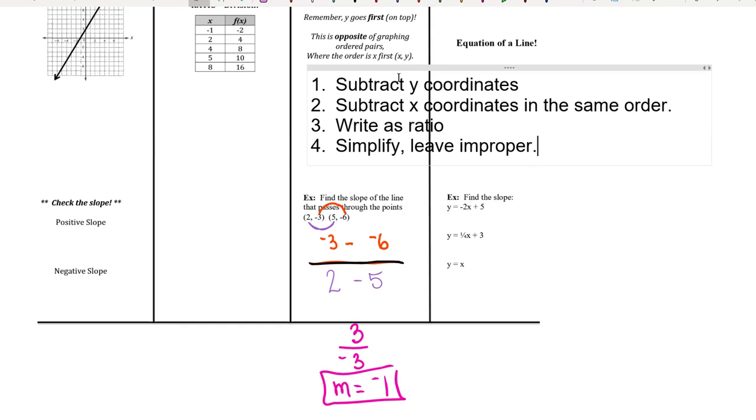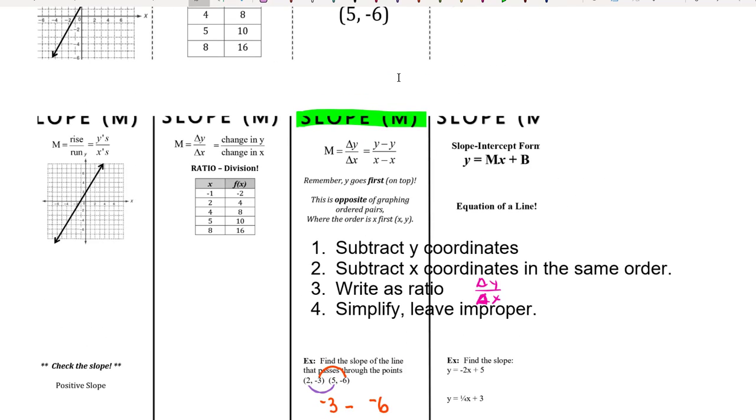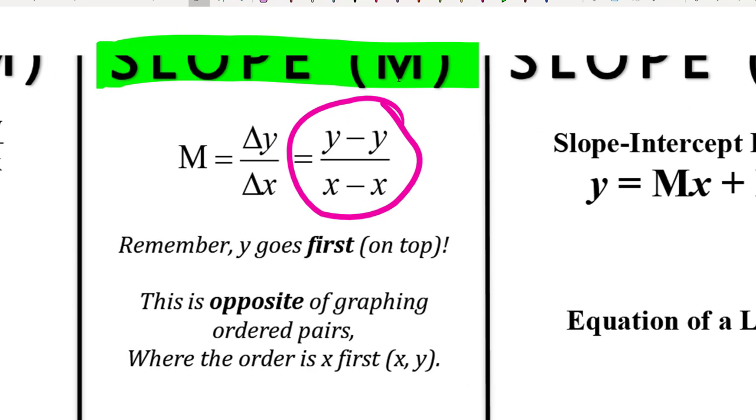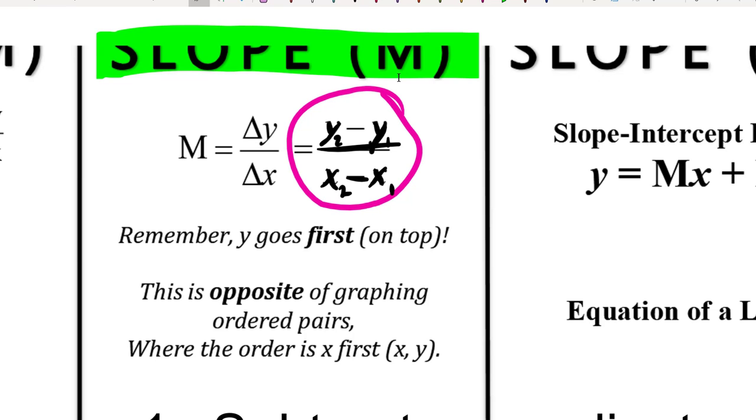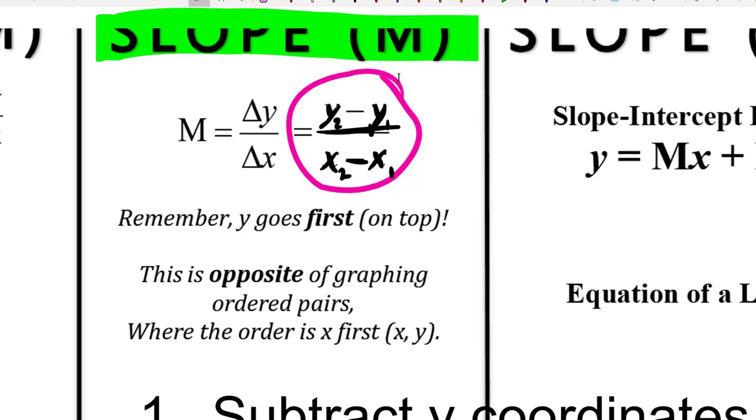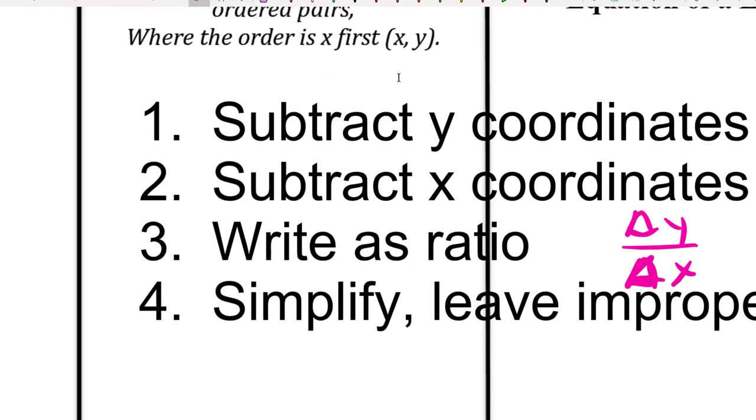And the ratio that we write is whatever the y change is over the x change. And something that you guys are going to see a whole bunch is this right here, the slope formula. And what they will do is they'll list it as y sub 2 minus y sub 1 over x sub 2 minus x sub 1. And what they're doing is they're getting really specific about which y coordinate and which x coordinate.